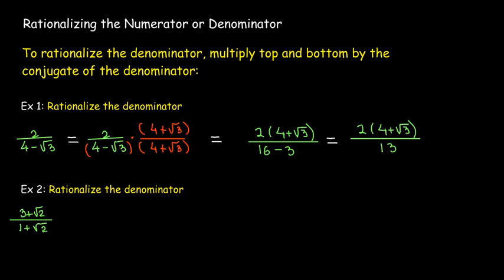Here's another example where I have two-term radical expressions — one in the numerator and one in the denominator. We're just going to rationalize the denominator. It's rare that you can rationalize both the numerator and the denominator at the same time. In example one, we have a rational denominator, but the numerator is irrational. Our goal here is to rationalize the denominator.